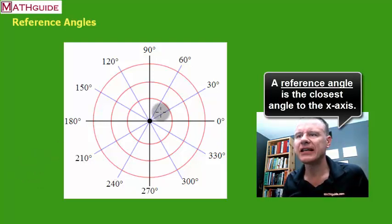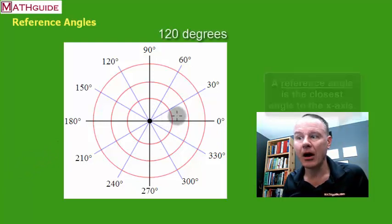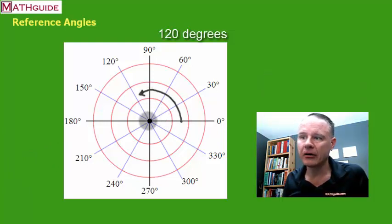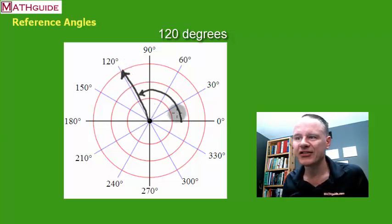All right, so let's say you're talking about a 120 degree angle. So you go over here, you're pointing at 120 or close to 120 there. So let's say that's a 120 degree angle. So now what you want to do is figure out, well, what is the closest angle to the x-axis.